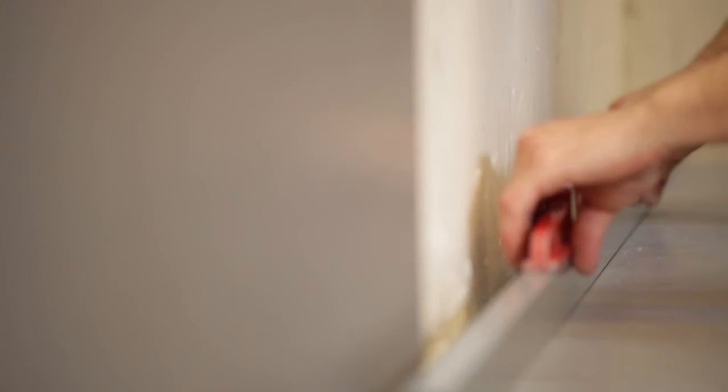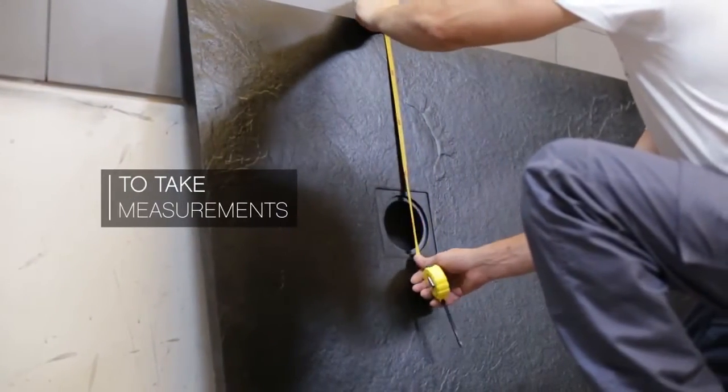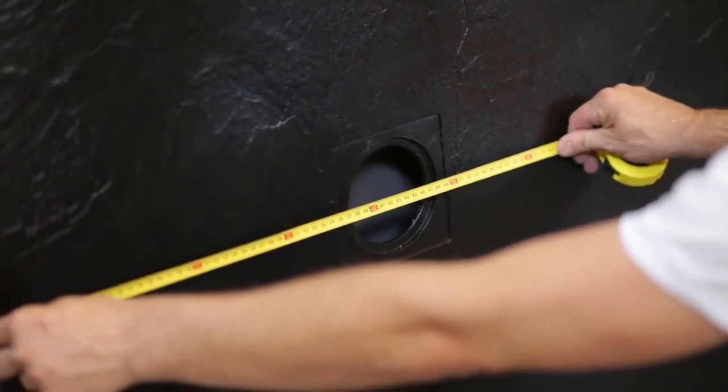A good option is to use ceramic pavement, which allows for fast, comfortable and clean work. For the making of the valve housing, measurements must be taken from the centre of the shower tray drain plug to be installed.